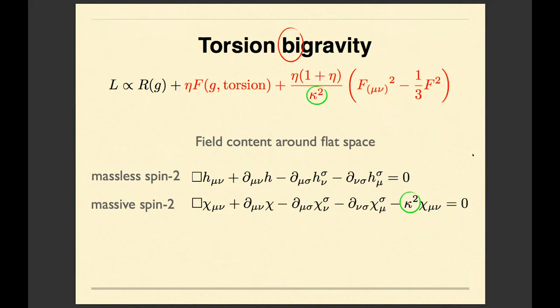Why is it bigravity? Because roughly speaking, we have two gravitons in this theory. We have usual massless graviton, and we also have massive graviton with a mass kappa, which is here.